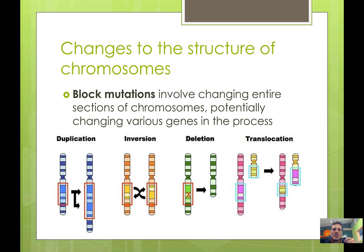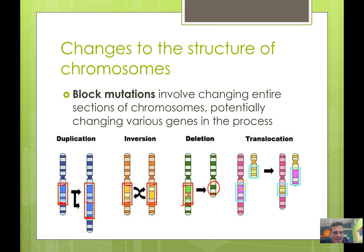We can also change the actual structure of a chromosome — we call this a block mutation, and it involves changing entire sections of chromosomes, potentially affecting dozens or hundreds of genes. There are different kinds: duplication, where a section is copied and added; inversion, where a section is flipped; deletion, where a section is removed; and translocation, where a section swaps with a different chromosome.